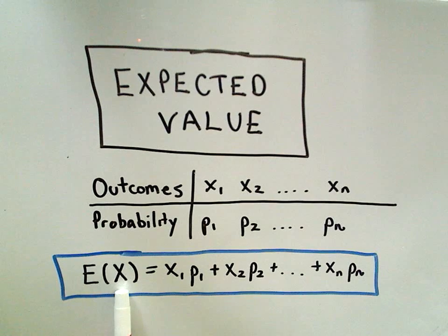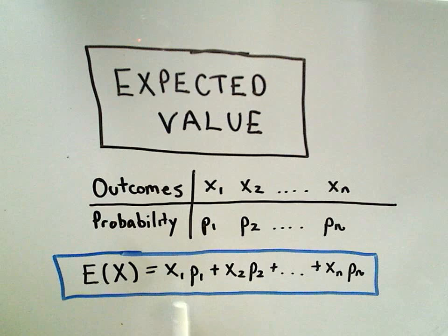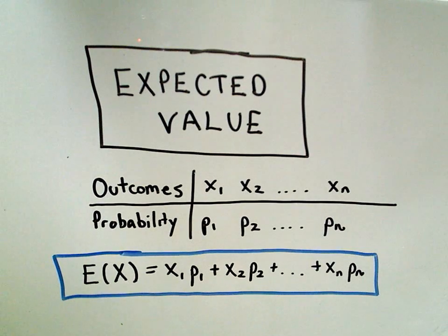And it says the expected value of your data set, that's what the x represents. It's sort of a weighted average or a long run average. And all you have to do to compute it is you take your outcome, multiply it by its respective probability of occurrence, add all of those together, and that's your expected value.